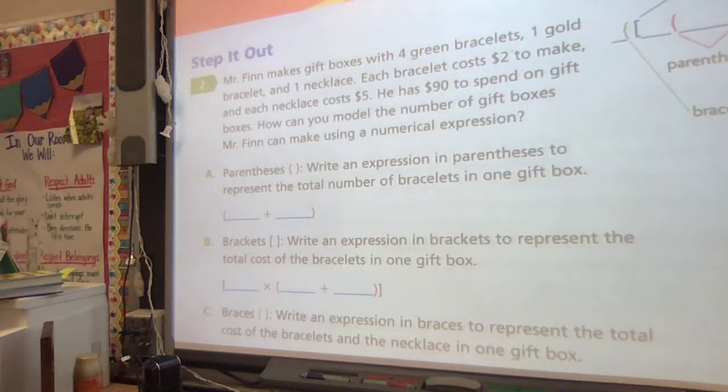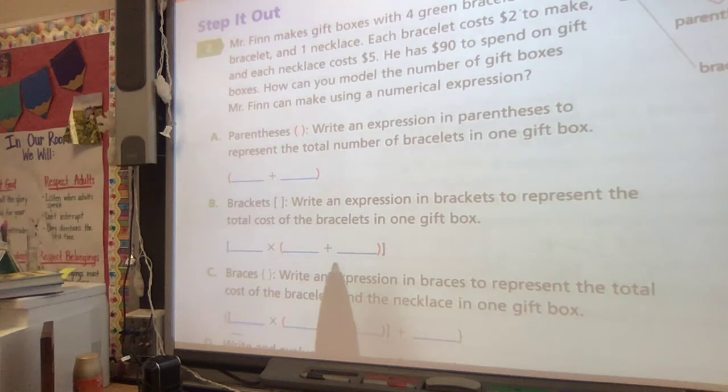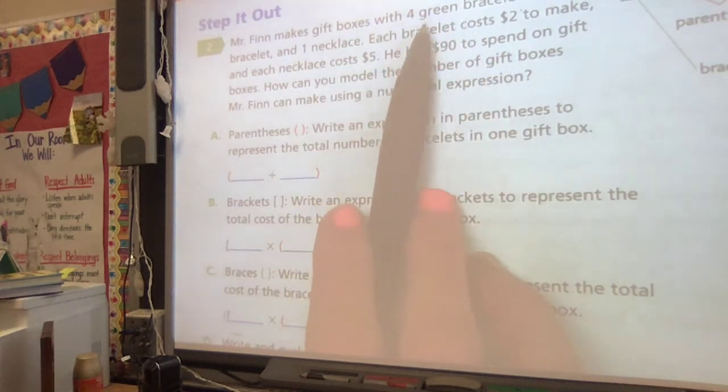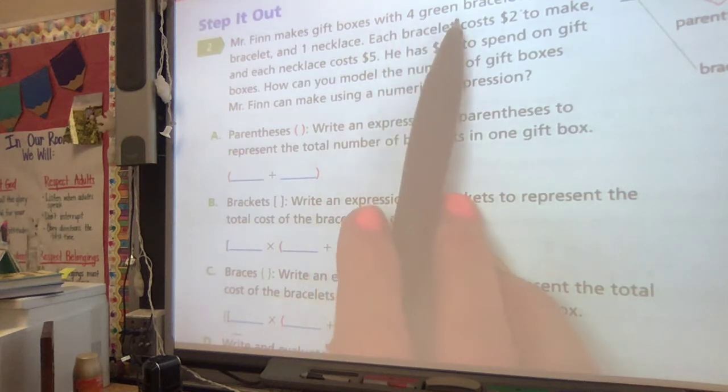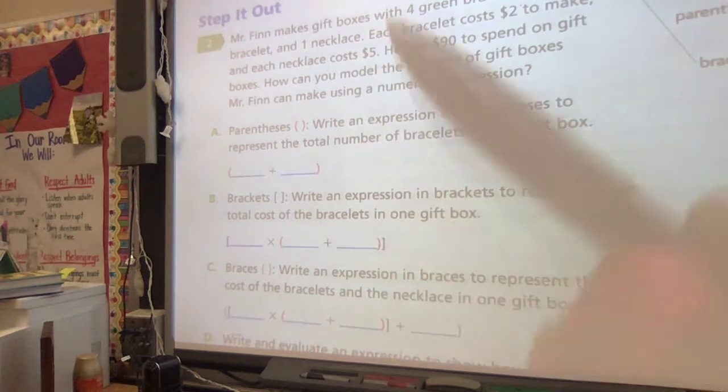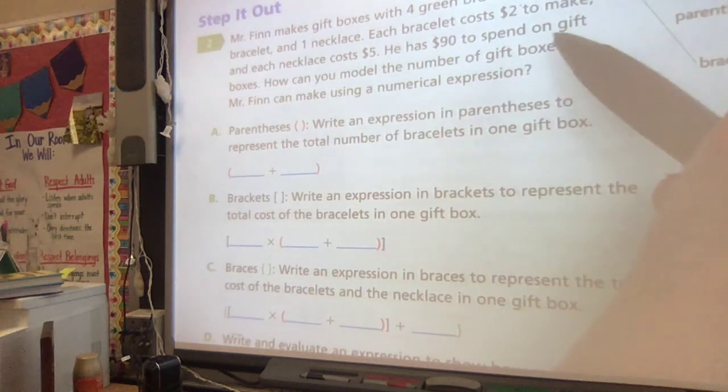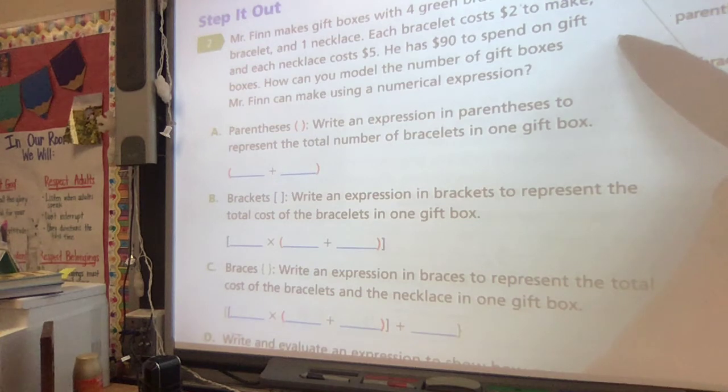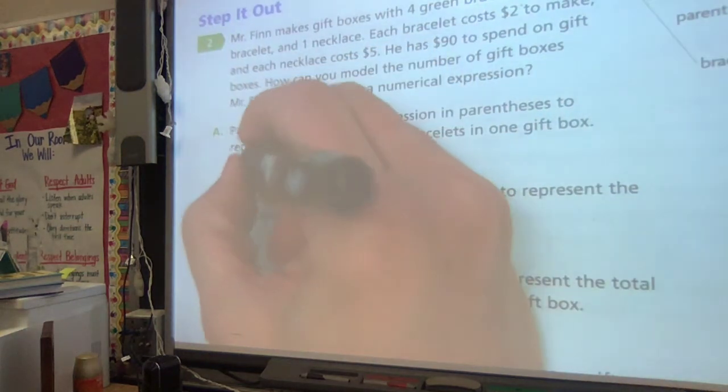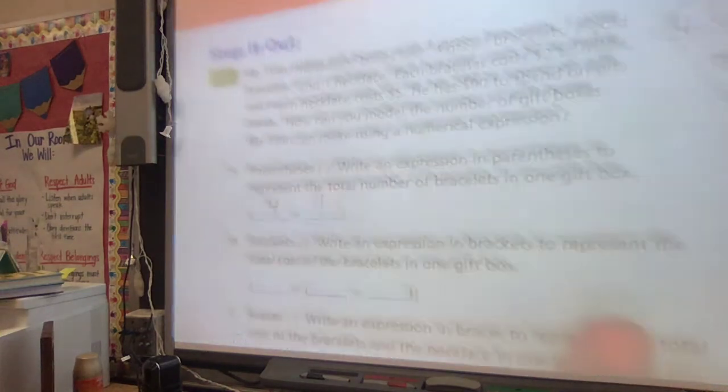This breaks it down for us. Parentheses: write an expression in parentheses to represent the total number of bracelets in one gift box. So remember, he has 4 green bracelets, and each bracelet costs $2 to make. And he also has a gold bracelet, so we have 4 green, 1 gold. So we'd write 4 plus 1.